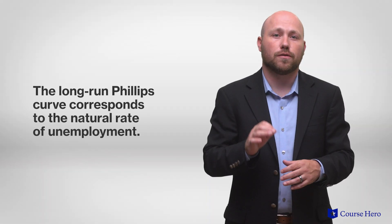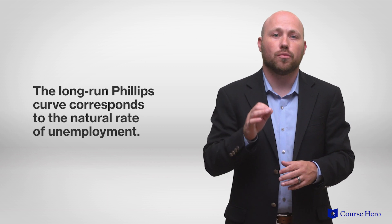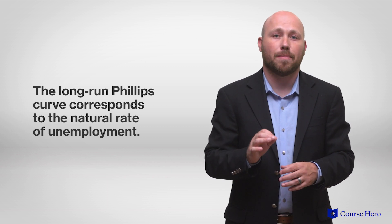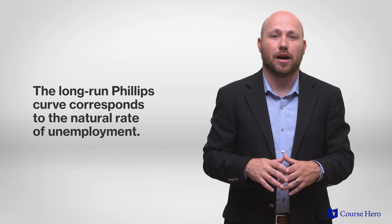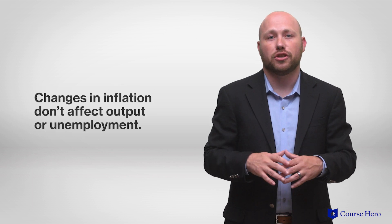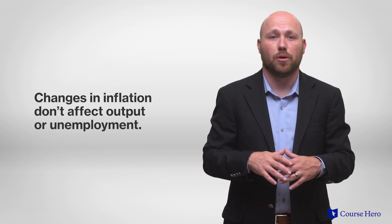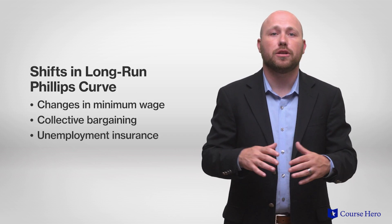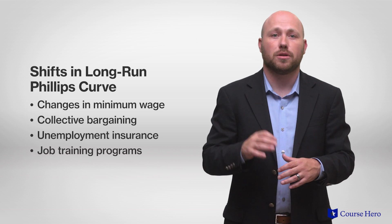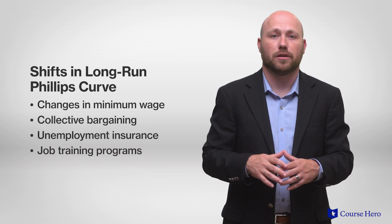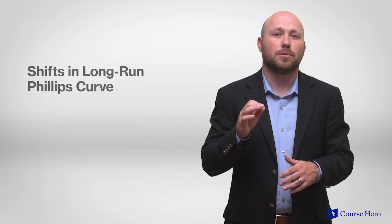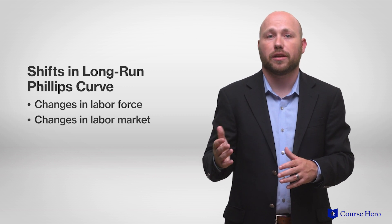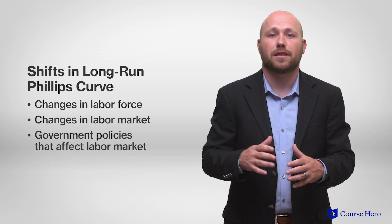The long-run Phillips curve corresponds to the natural rate of unemployment, which is the rate of unemployment when the economy is at capacity or its potential level of output. In the long run, changes in inflation don't affect output or unemployment. Policy changes in minimum wage laws, collective bargaining laws, unemployment insurance, and job training programs will cause shifts in the long-run Phillips curve. Things that affect the natural rate or potential output will shift the long-run Phillips curve, including changes in the labor force, changes in the labor market, and government policies that affect the labor market.